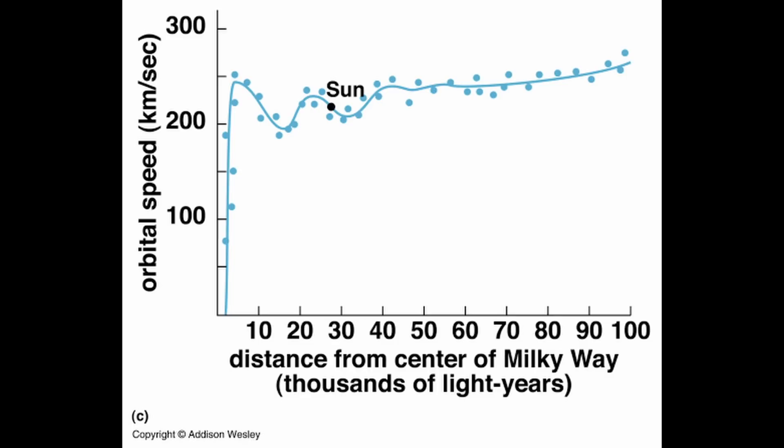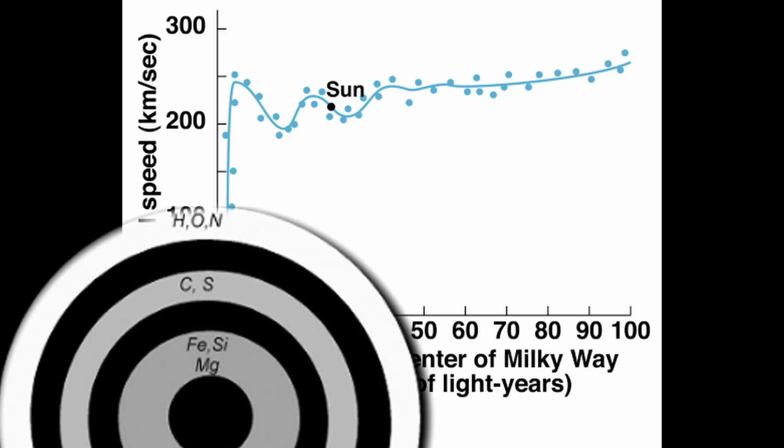This might be explained by considering that Marklund convection would cause material to bunch together creating higher density rings as we move further out. Thereby altering the mass profile and hence the gravitational field of the galaxy causing parts to rotate slower and faster.